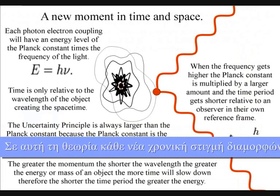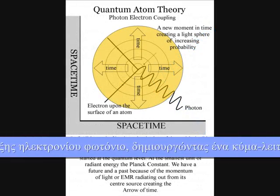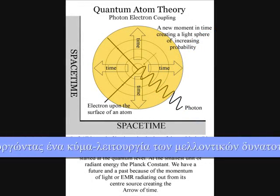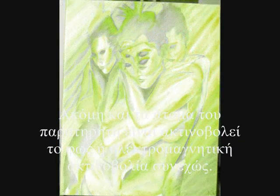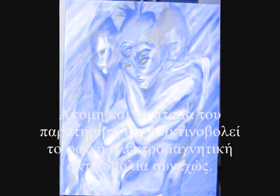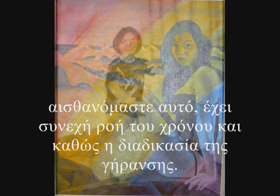In this theory, at the quantum level of the atoms, the moment of now is created by a single photon-electron coupling, creating a wave function of future possibilities. Even the individual atoms of the observer are radiating electromagnetic radiation continuously. The observer will feel this as the continuous flow of time, and as the aging process.